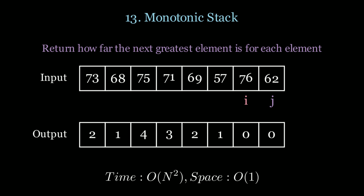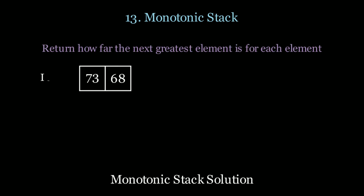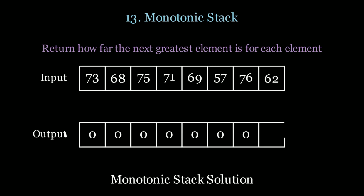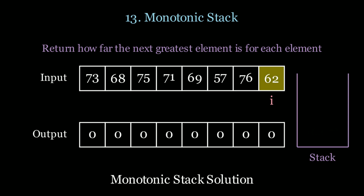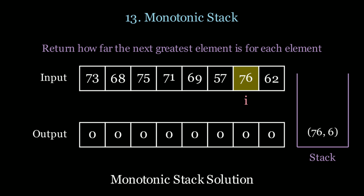Can we do better? Using a monotonic stack, we start from the end of the list and keep a decreasing order in the stack. First we add 62. Now we go to 76 — 62 is less than 76 so we pop from the stack. Now we add 76 and go to 57.